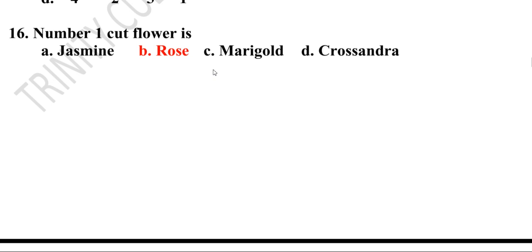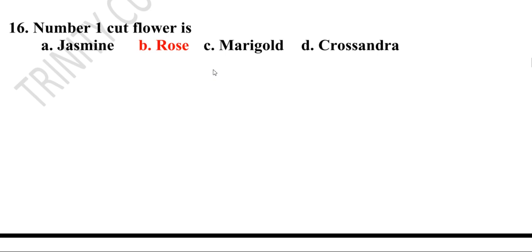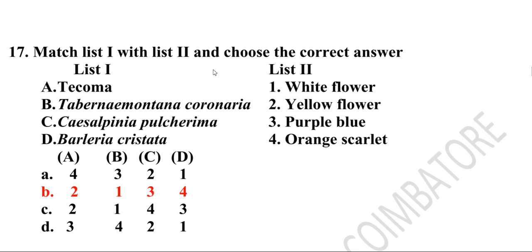Sixteenth question: Which is the number one cut flower — jasmine, rose, marigold, or crossandra? Rose is the number one cut flower. Seventeenth question: Match list one with list two. Tecoma — yellow flower; Tabernaemontana coronaria — white flower; Alpinia — purple blue flower; Barleria cristata — orange scarlet. Option B is the correct answer: two, one, three, four.